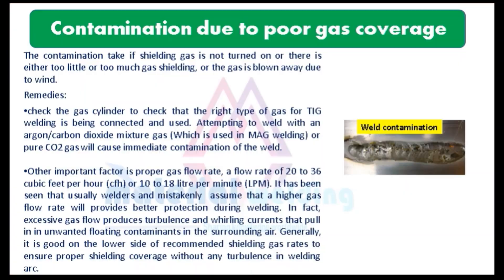Number 1 is contamination due to poor gas coverage in TIG welding. Contamination occurs if shielding gas is not turned on, or there is either too little or too much gas shielding, or the gas is blown away due to wind.